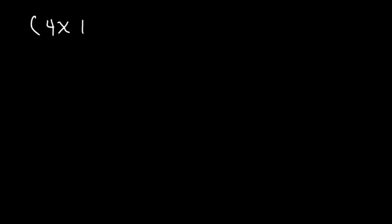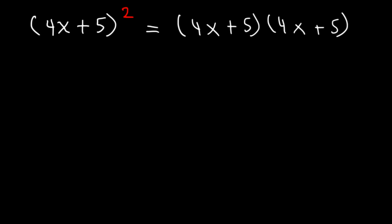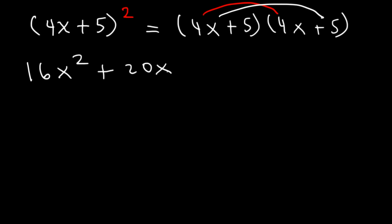Let's try another example. Go ahead and expand and simplify this expression: 4x plus 5 squared. Feel free to pause the video as you work on this example. So if you were to see a question like this on the test, you need to know that 4x plus 5 squared is equivalent to 4x plus 5 times another 4x plus 5. Now let's go ahead and FOIL it. 4x times 4x is 16x squared. Next, we have 4x times 5, which is positive 20x. And then 5 times 4x, which is another positive 20x. And finally, the last two, 5 times 5, which is 25.